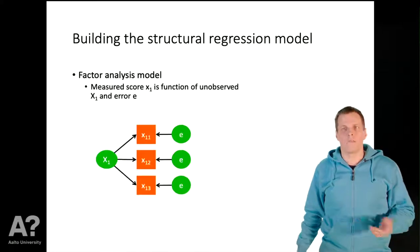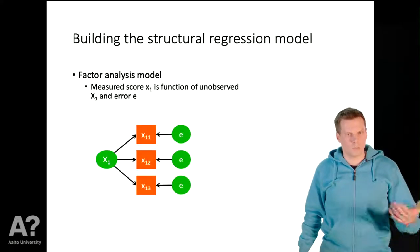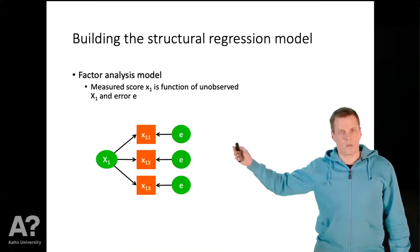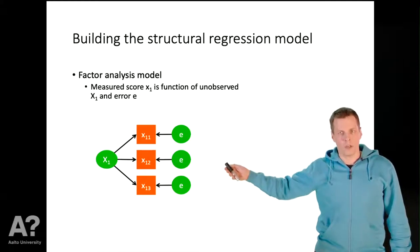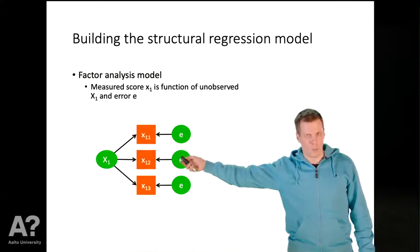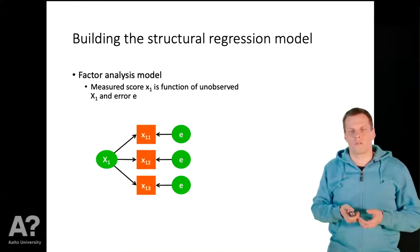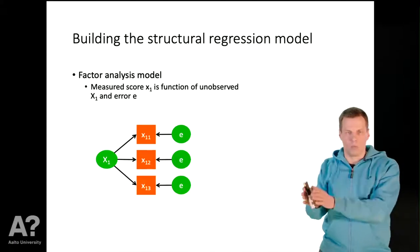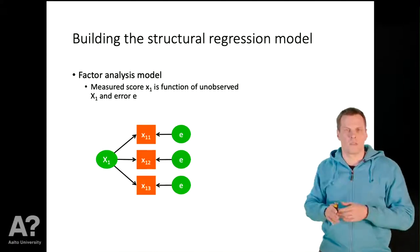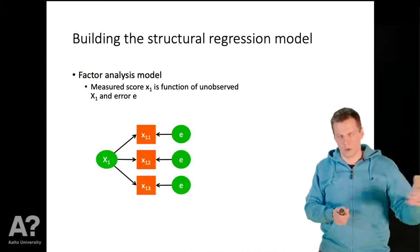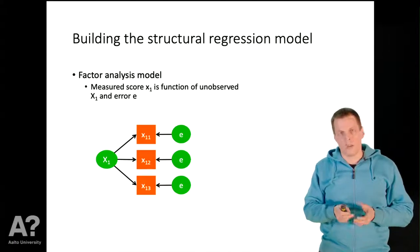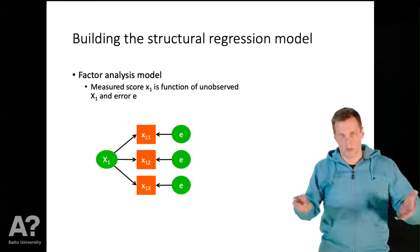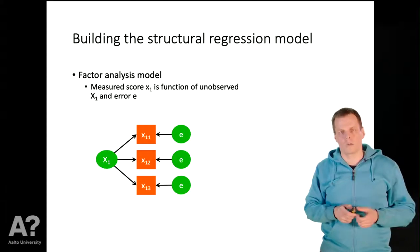Then we have the factor analysis model. The idea is that we have a set of indicators and we ask what these indicators have in common — and what they have in common is one factor. In confirmatory factor analysis, we ask whether these indicators represent one factor or not, and the computer gives us an answer. In exploratory factor analysis, the computer finds the factor itself, but that is not part of the structural regression model.